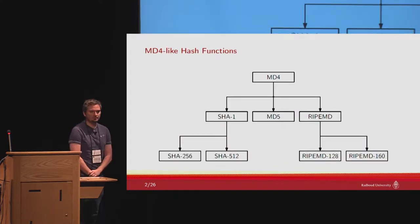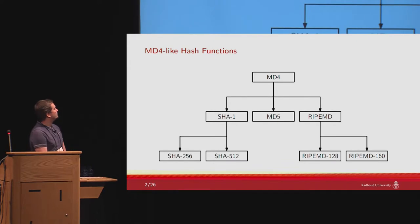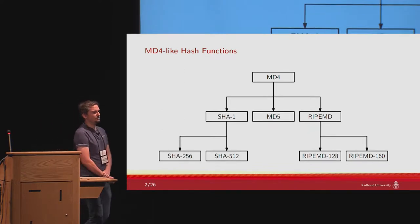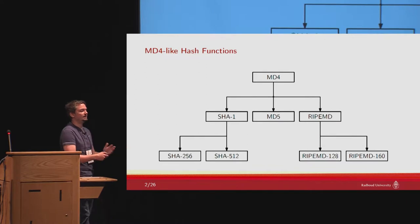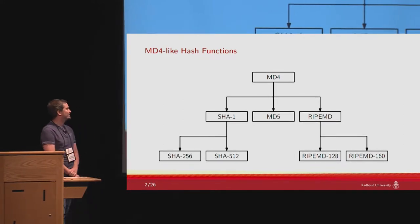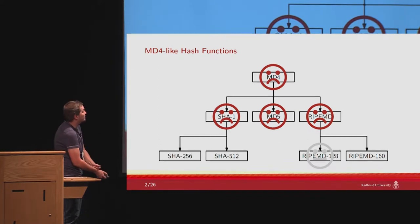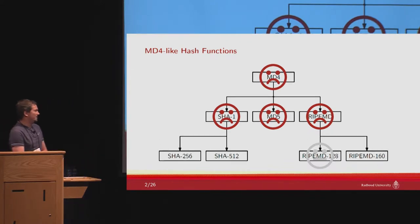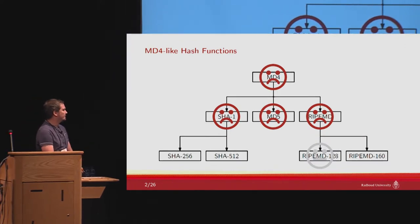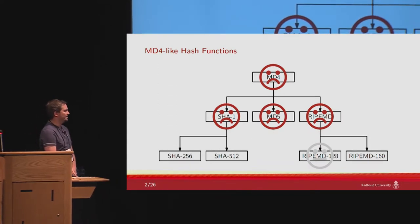Let's go back to the 90s, to the timeframe where RIPE MD was designed. Around the time RIPE MD 160 was designed, a lot of other hash functions were designed which share some similarities. If we look at attacks on these 90s hash functions, we see a smiley for MD4, MD5, and SHA-1, meaning we have practical collisions for them. As far as I know, for RIPE MD 128 there are only some theoretical non-ideal properties on the hash function — hence the math smiley.